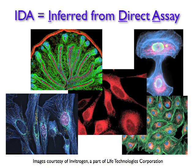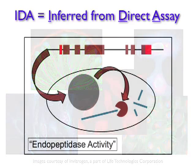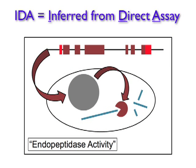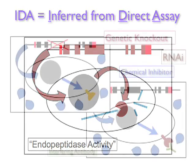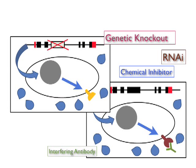or inferred from direct assay. IDA can also be used for experiments such as expressing a cloned DNA for an enzyme and directly assaying the function of the resulting protein. On the other hand, suppose a researcher were to interfere with the normal function of a gene by reducing its expression or by inhibiting the function of its protein product. In that case,